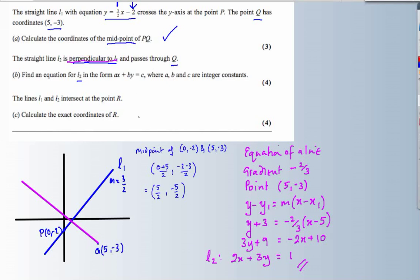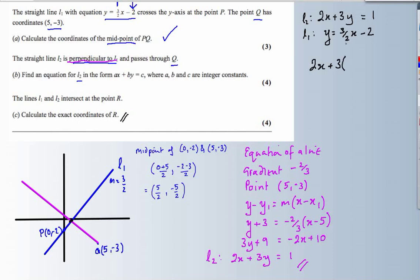Finally, I need a point of intersection R between the two lines. This is a simultaneous equation — I have L2 that I've found and L1 that I was given. I'm simply going to substitute in. With L2 I have 2x + 3y, and I will take my y from L1: y = (3/2)x - 2, and that equals 1. So I've substituted L1 into L2.